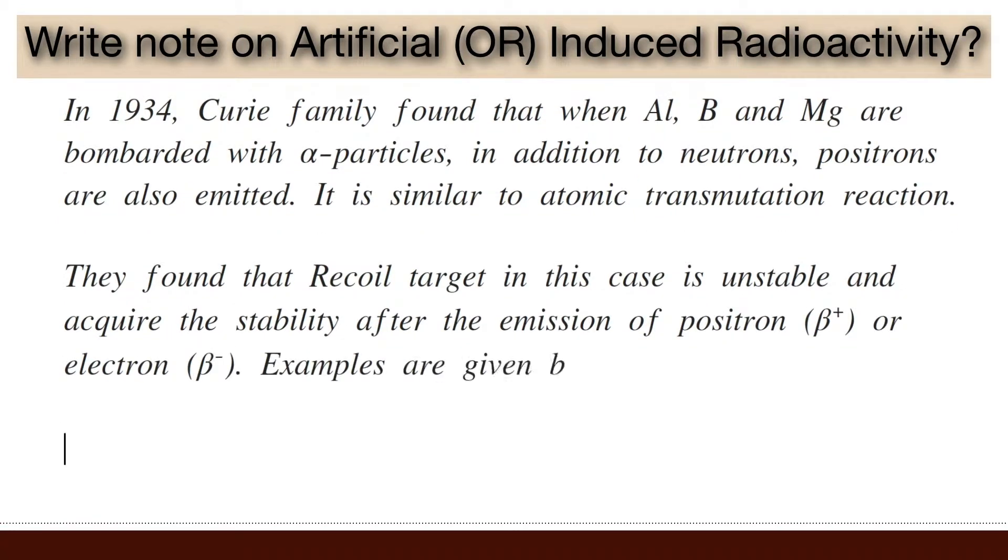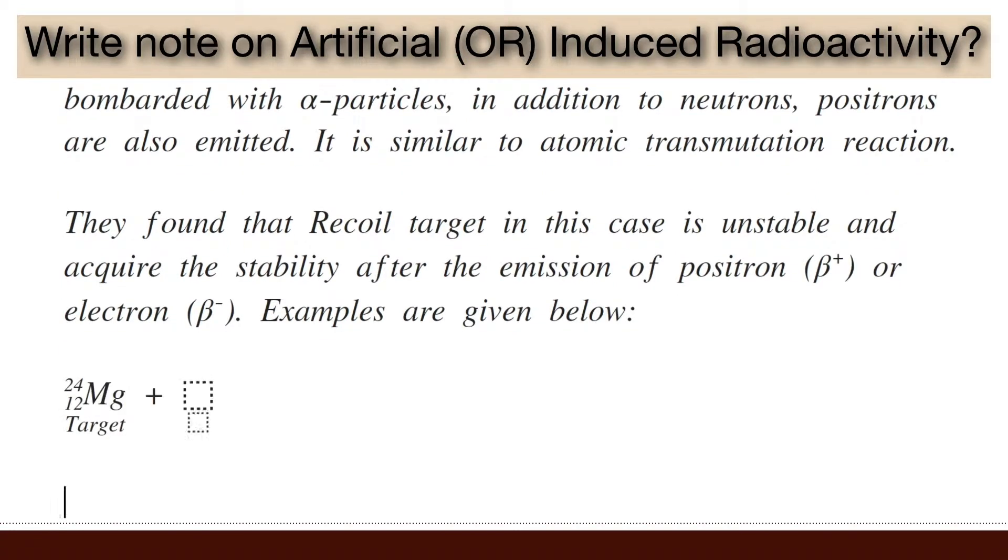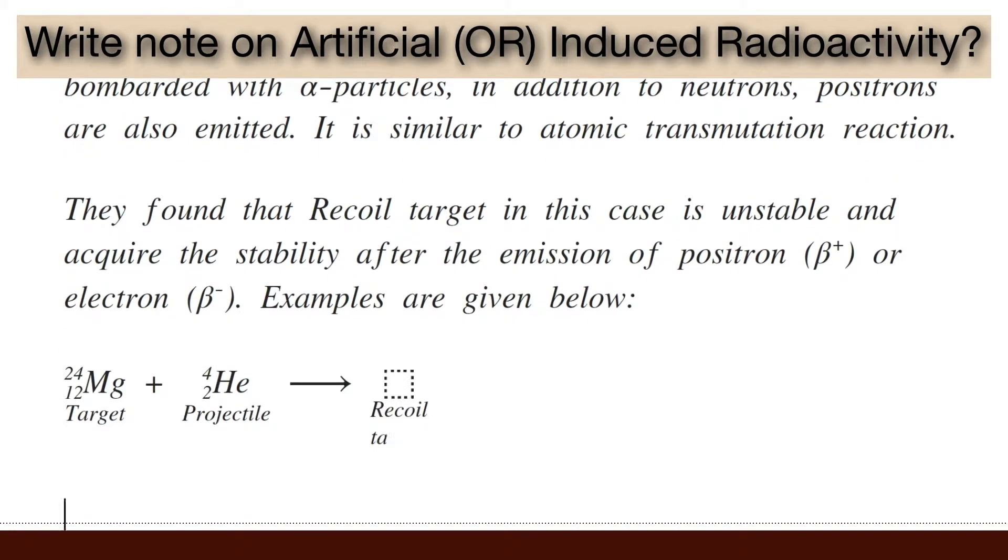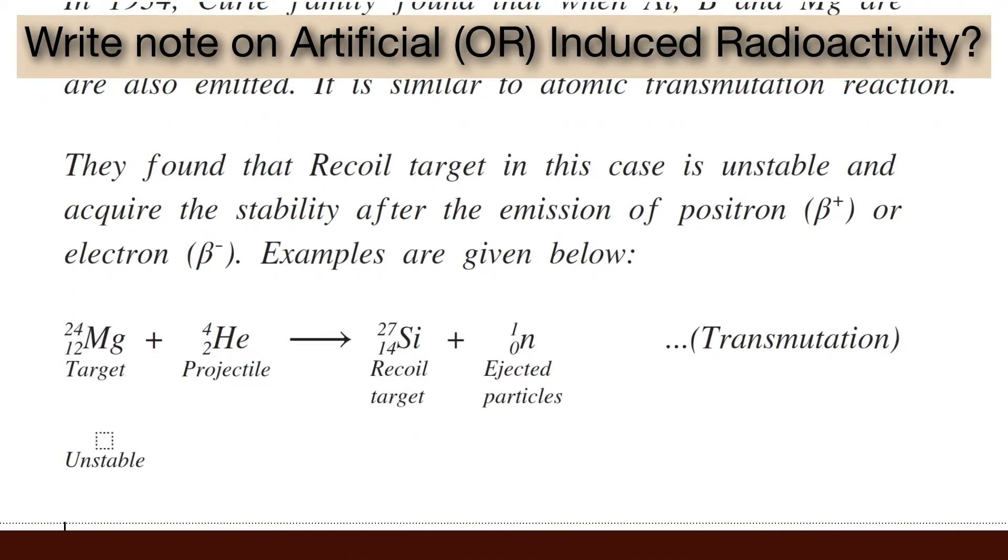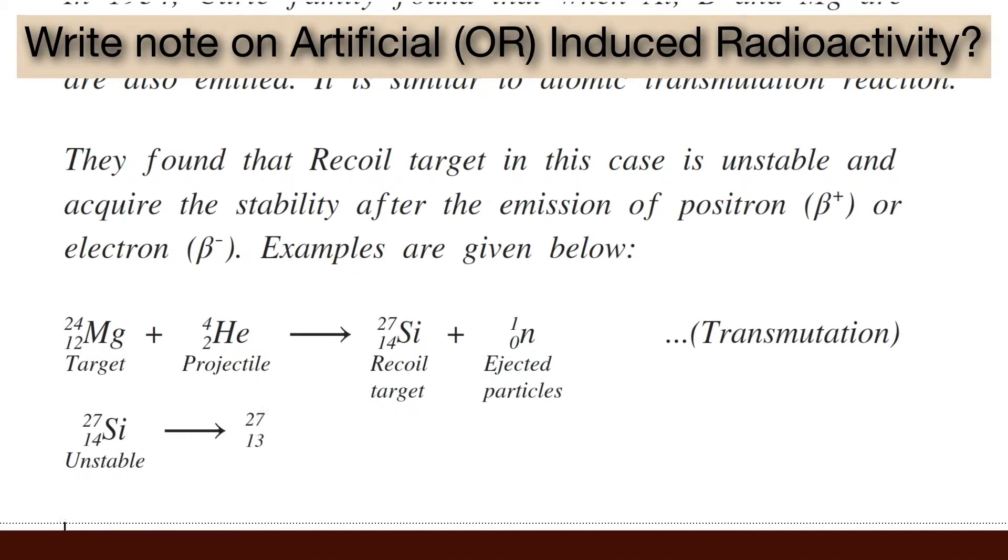Examples of such reactions are magnesium-24 bombarded with helium produces silicon-27 and neutron is emitted out. This is transmutation reaction. The produced silicon-27 on disintegration produces aluminium-27 and one positron is emitted out.